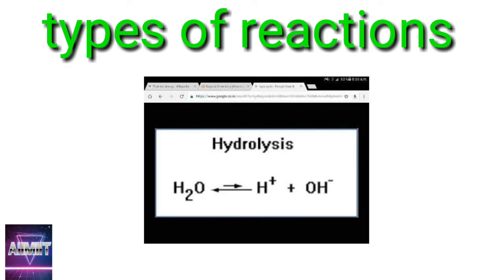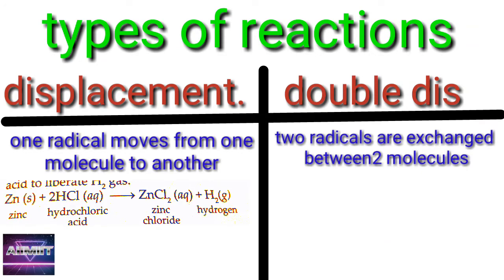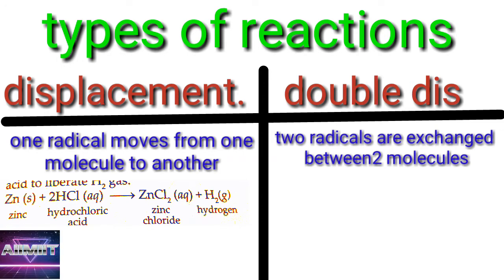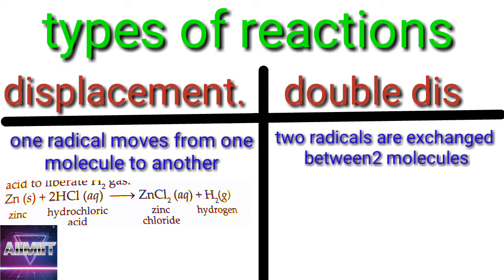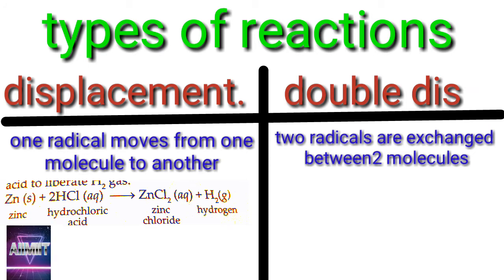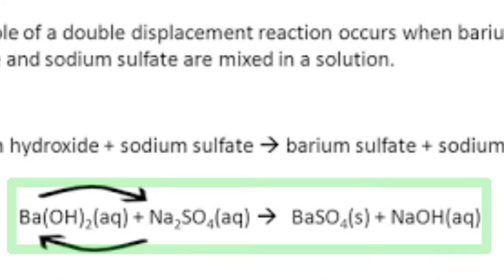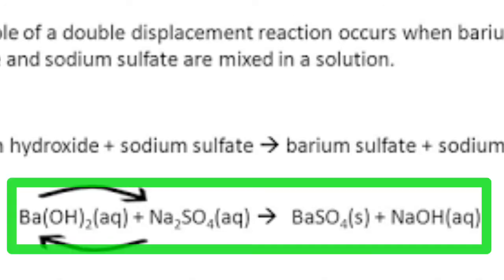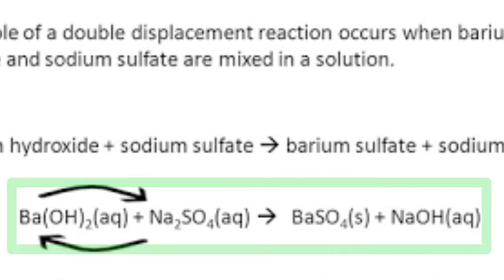In displacement reactions, one atom moves from one molecule to another. In double displacement, two atoms are exchanged between two molecules. Displacement example: Zn + 2HCl → ZnCl₂ + H₂ — here chlorine moves from HCl to zinc. Double displacement example: Ba(OH)₂ + Na₂SO₄ → 2NaOH + BaSO₄. Barium sulfate is a white precipitate — a very important question — and here hydroxide and sulfate ions exchange their positions.